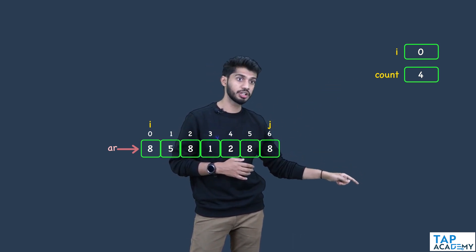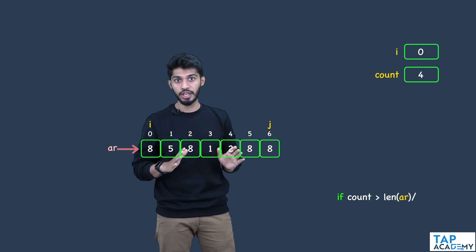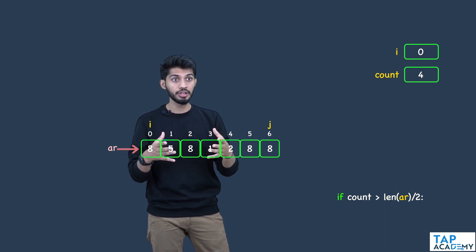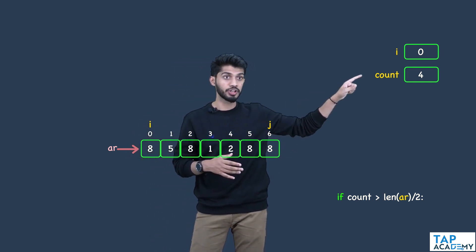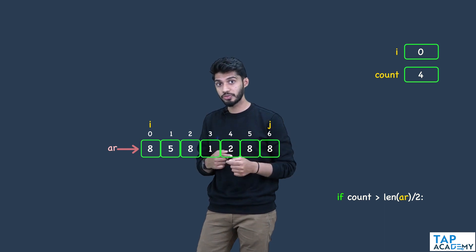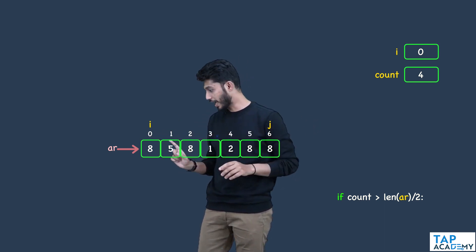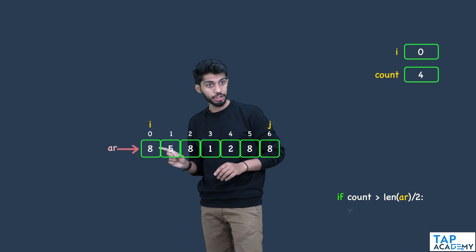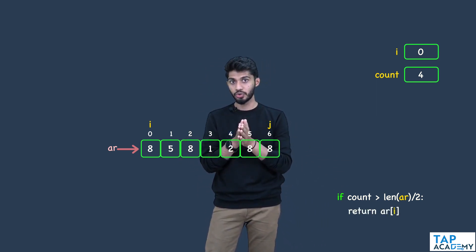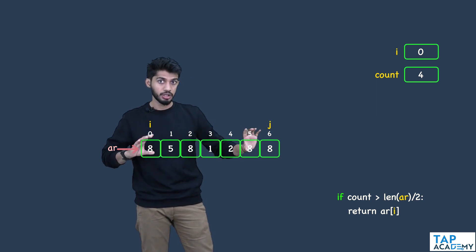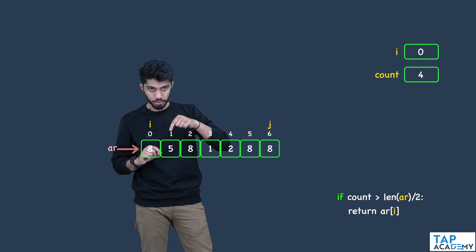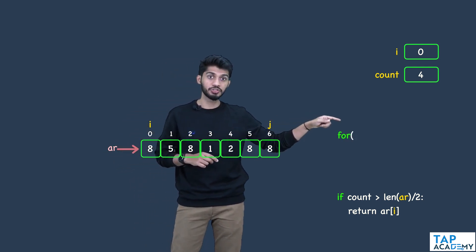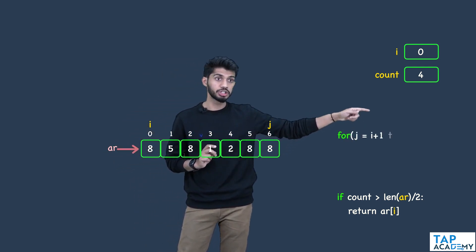I write an if condition: if count is greater than the length of the array divided by 2, then I need to return a value. The value which has occurred these many times is 8, which is present at index i. So what I need to return is ar[i]. The value of j started from index 1 and went till index 6, so I can write a for loop where j starts from i plus 1 and goes till the length of the array.